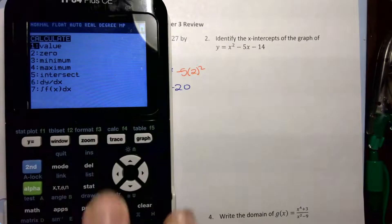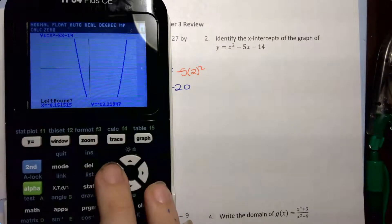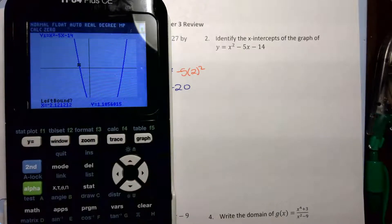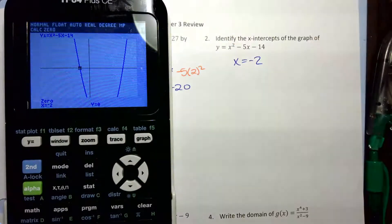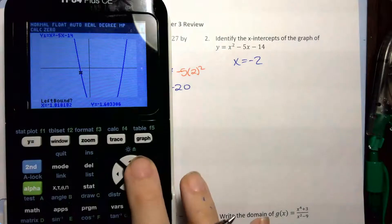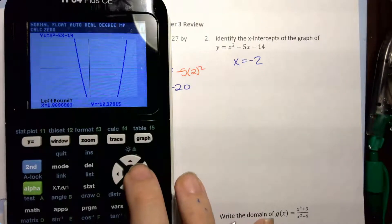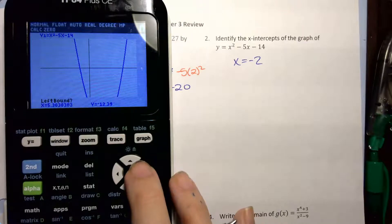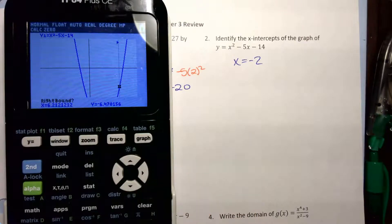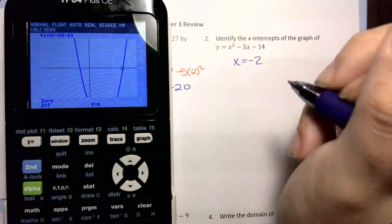These are called zeros. So I'm going to go 2nd, trace, zero. I want to be on the left side of the left crossing, press Enter, cross the x-axis, press Enter twice. This gives me negative 2. And I'm going to do the same thing for the other side — go back to 2nd, trace, zero. I'm going to move this black dot until I see it on the other side, press Enter, cross the x-axis, press Enter twice. And this gets me 7.